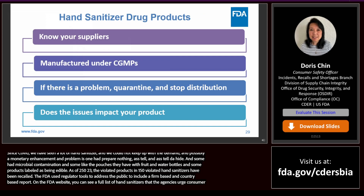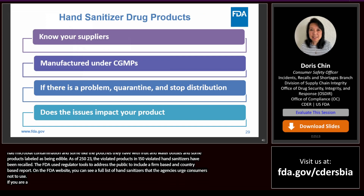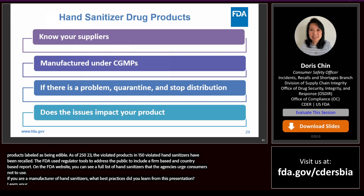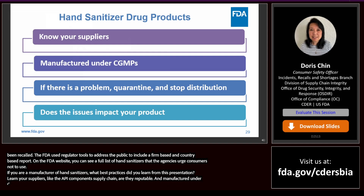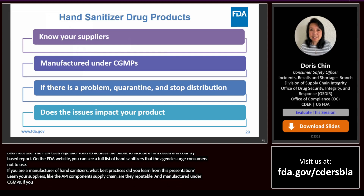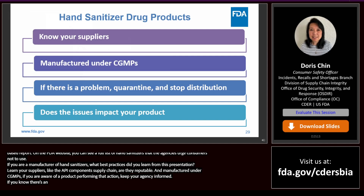If you are a manufacturer of hand sanitizers, best practices include knowing your suppliers — particularly the API component supply chain — and ensuring they are reputable. Ensure products are manufactured under CGMPs. If you are aware there's a problem, quarantine the products while deciding on an action, keep the agency informed, and if the agency alerts industry to a problem, look into the issue to see if it impacts your product. These best practices also apply to other types of drug products, not just hand sanitizers.